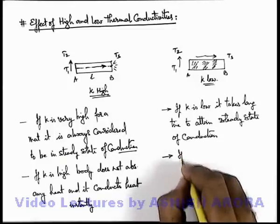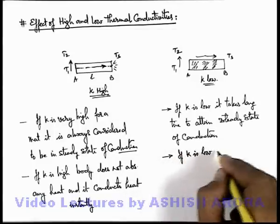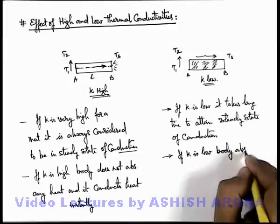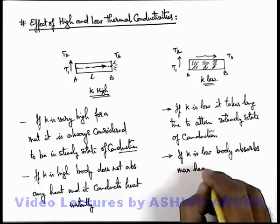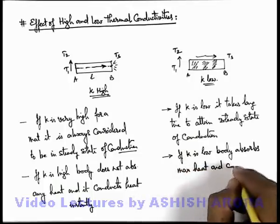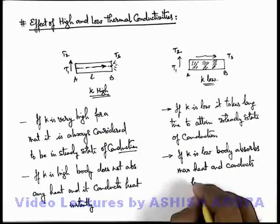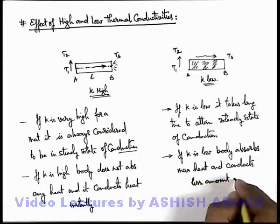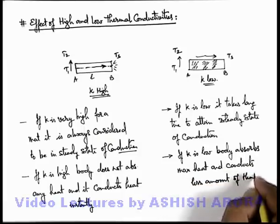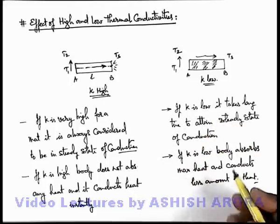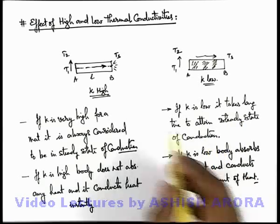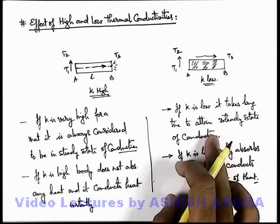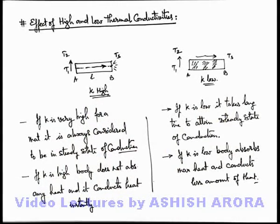To summarize for low k: the body absorbs maximum heat and conducts less amount of heat, and it will take a long time to attain the steady state of conduction. So we must be very careful about both cases — what happens when the value of k is high and what happens when the value of k is low.